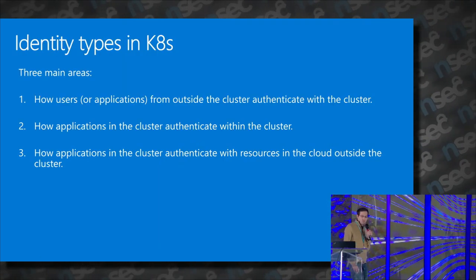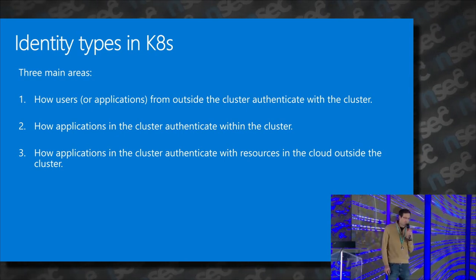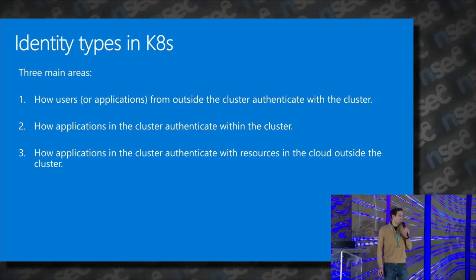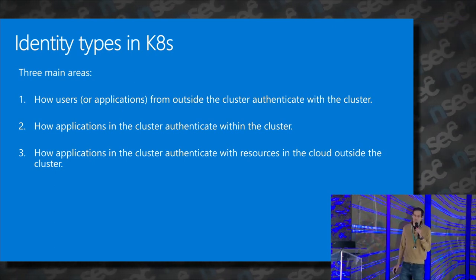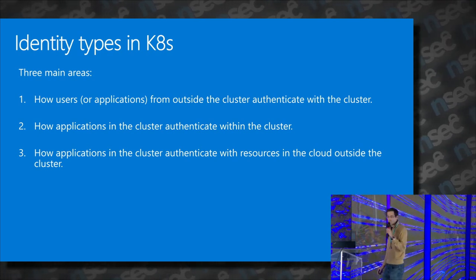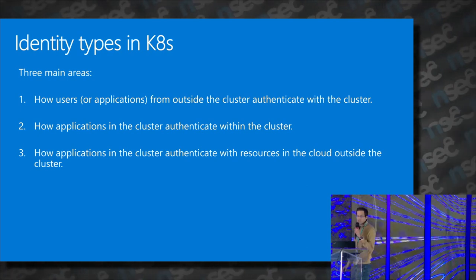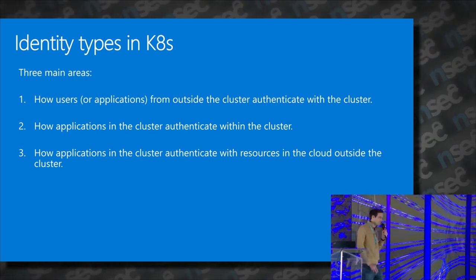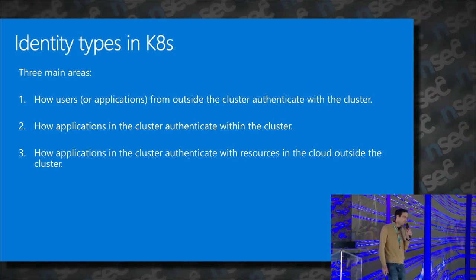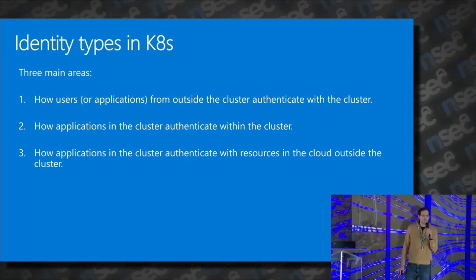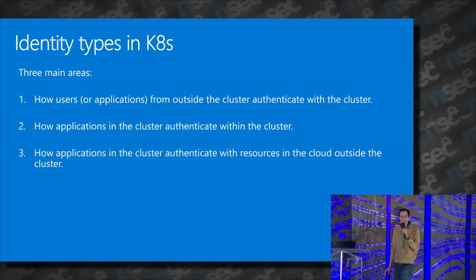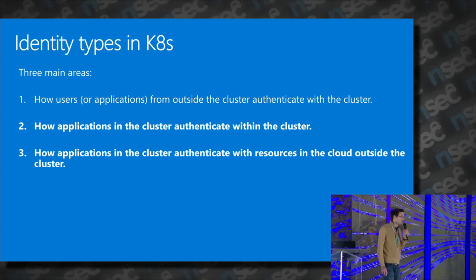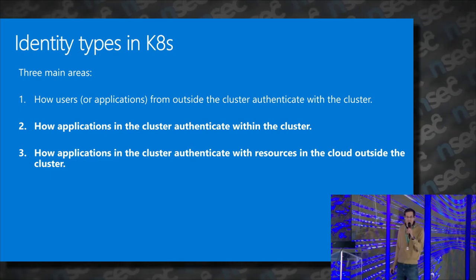Now that we know what Kubernetes is, let's talk about identity types in Kubernetes. We can split it into three main areas: how users from outside the cluster authenticate with the API server, how applications in the cluster authenticate with the API server, and how applications in the cluster authenticate with resources outside the cluster in the cloud. In this talk, we're going to focus on questions two and three, because that's what's important for lateral movement.